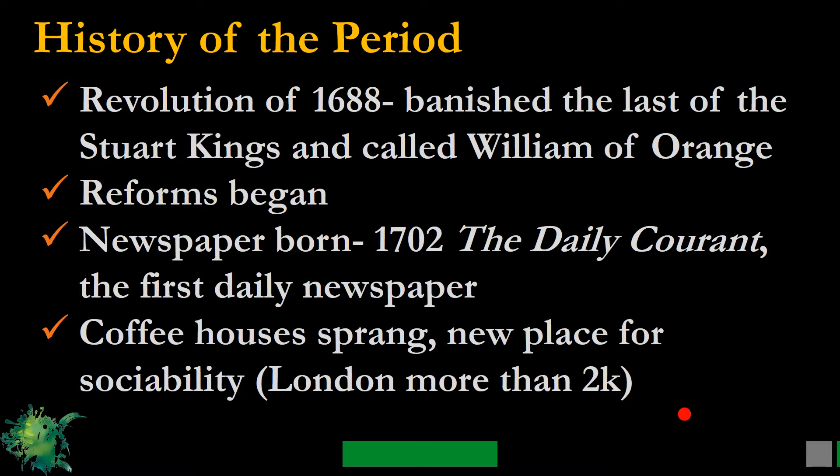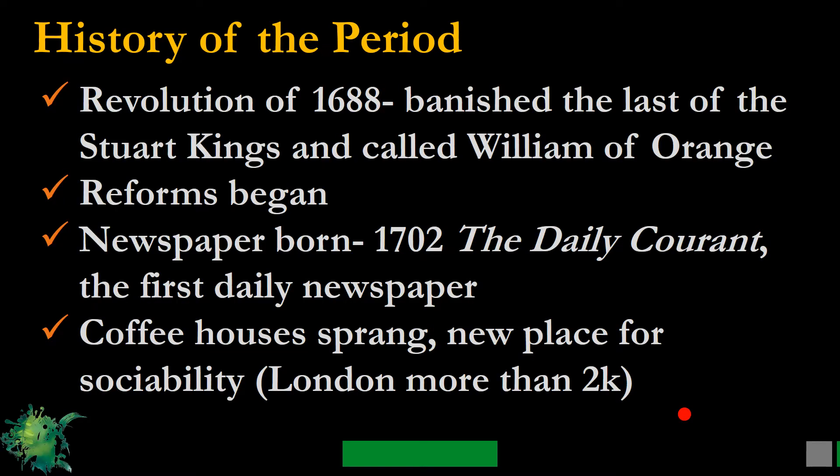The first daily newspaper, The Daily Courant, began in 1702. This newspaper gave material to people who discussed different types of issues published in it. From there, people exchanged their thoughts and opinions through different mediums. The next major development was the springing up of coffee houses — a new place for sociability.